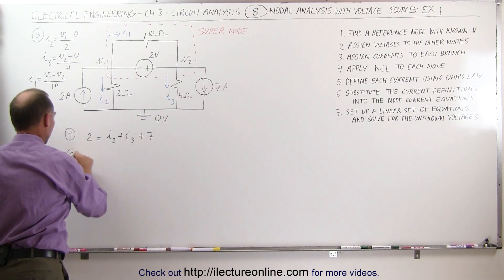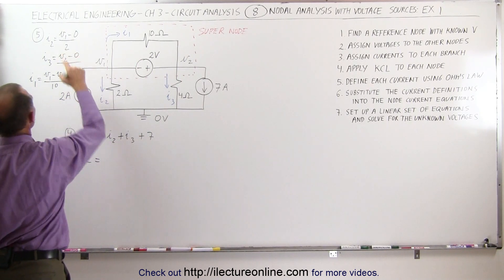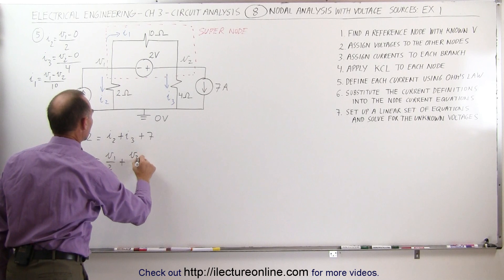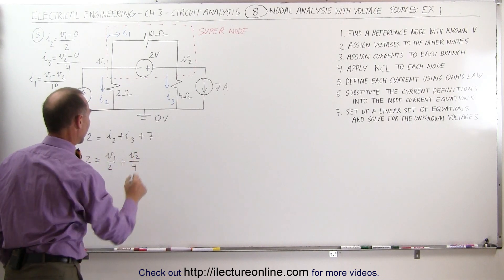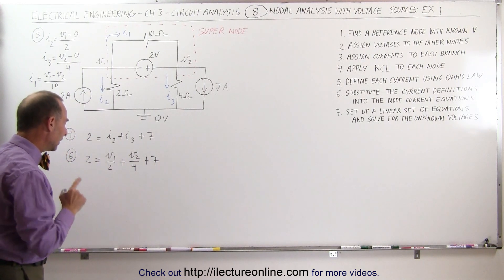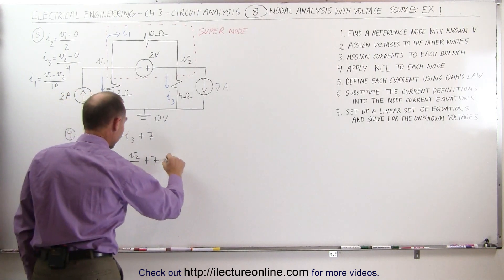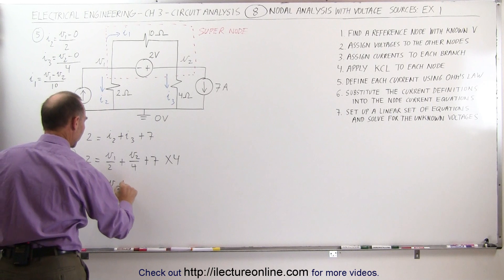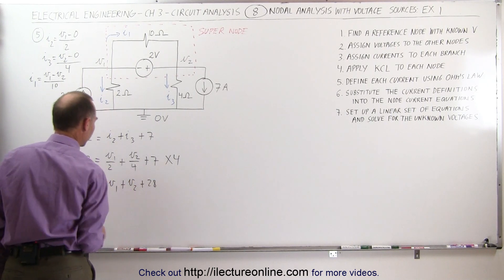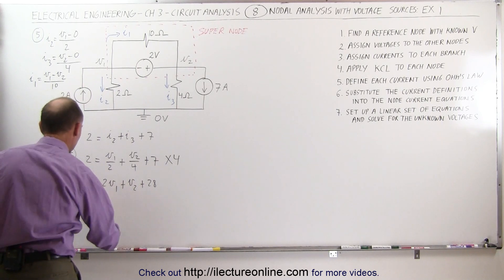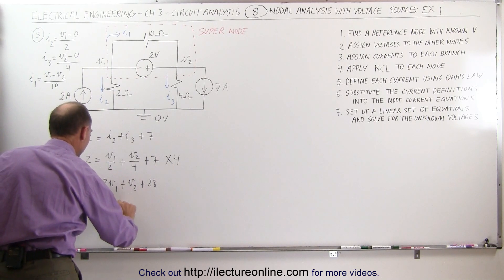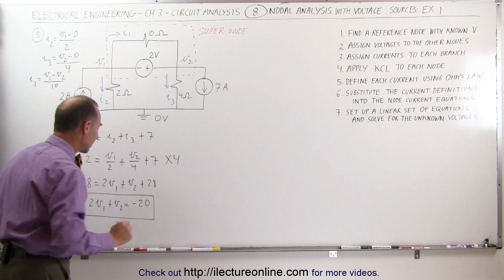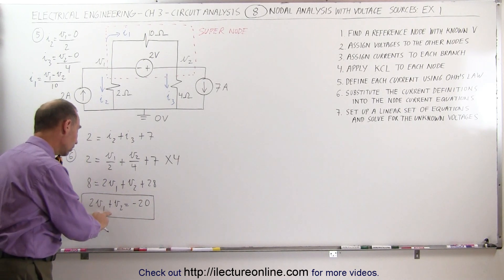Step 6, 2 equals I2 and I2 is equal to V1 divided by 2 plus I3 and I3 is equal to V2 divided by 4 and I add 7 to that. Simplifying this equation a little bit, I can do that by multiplying the equation by 4. That gives me 8 is equal to 2V1 plus V2 plus 28. Moving the 28 to the other side and turning the equation around, I get 2V1 plus V2 is equal to minus 20, but I still have a problem. I have two unknowns and just one equation.